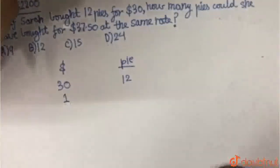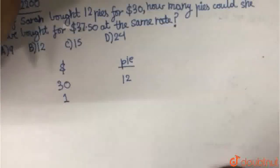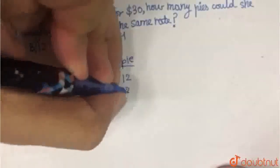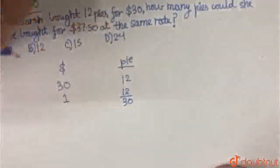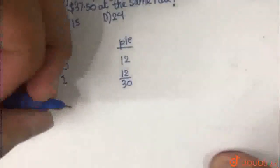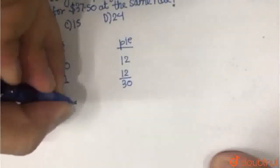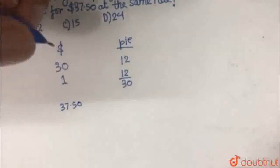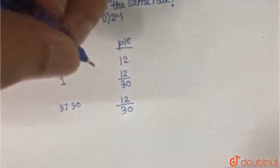So for $1, how many pies will Sarah buy? Obviously, it will be less than 1. So it will be 12 upon 30. For $37.50, how many pies will Sarah buy? 12 upon 30 into 37.5.